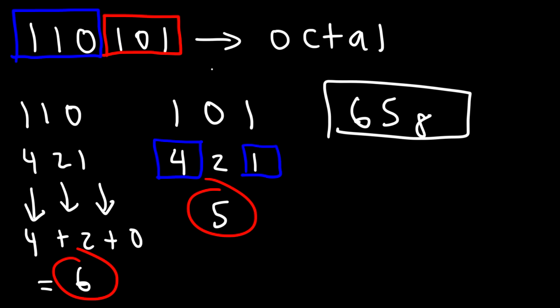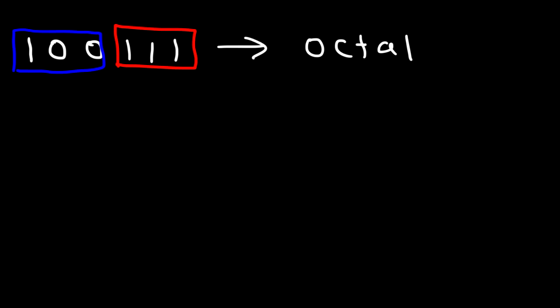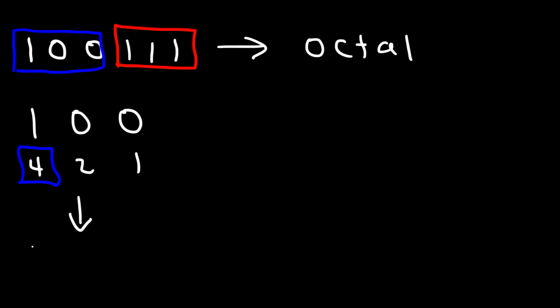That's how we convert a binary number to an octal number. Now let's try another example. If we have the binary number one zero zero one one one, we convert it into an octal number by separating it into groups of three. The first group of three is one zero zero, which has an equivalent value of four.